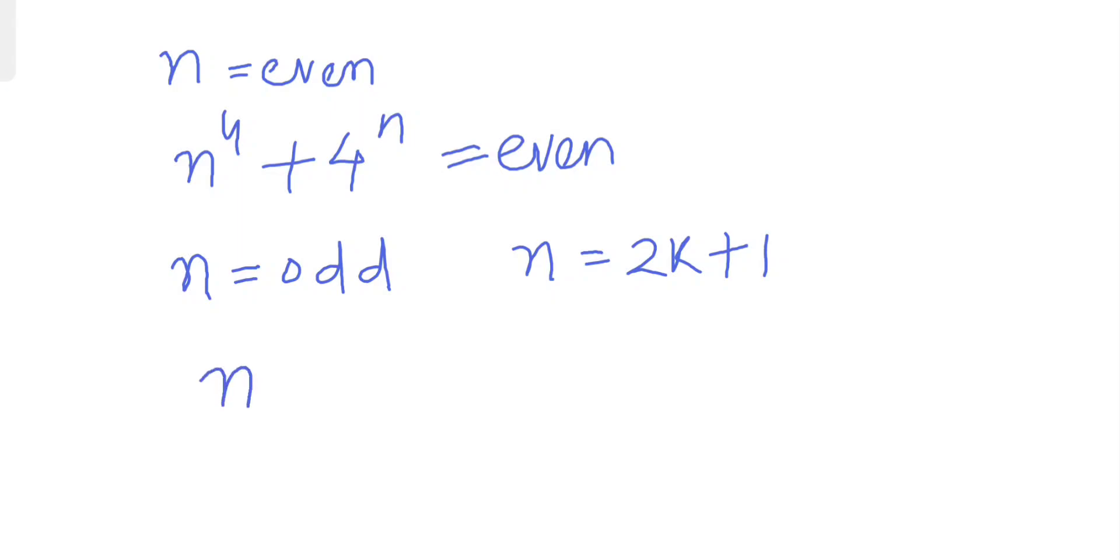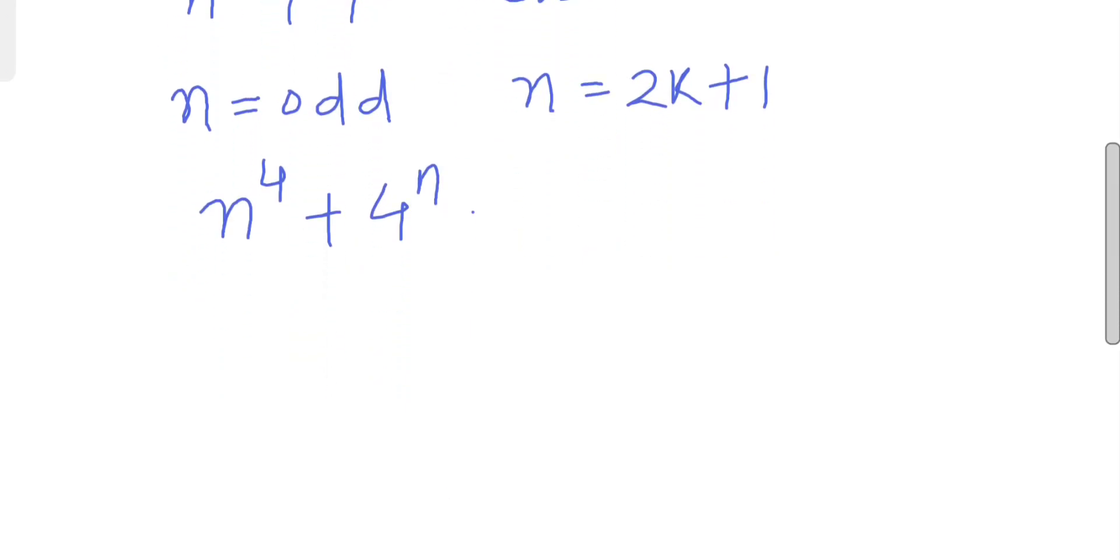n to the power 4 plus 4 to the power n can be written as (2k plus 1) to the power 4 plus 4 to the power (2k plus 1). Now let's simplify a bit.